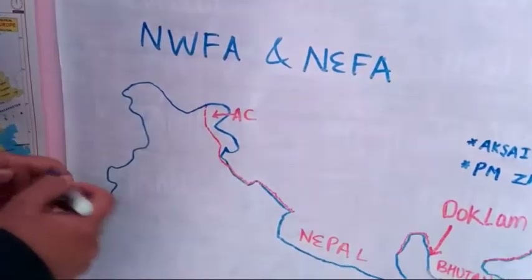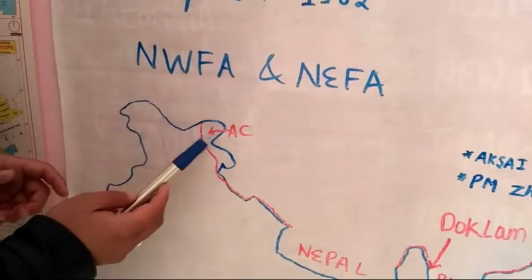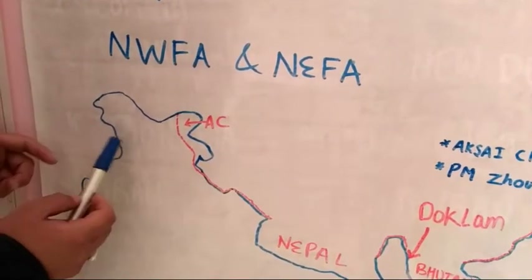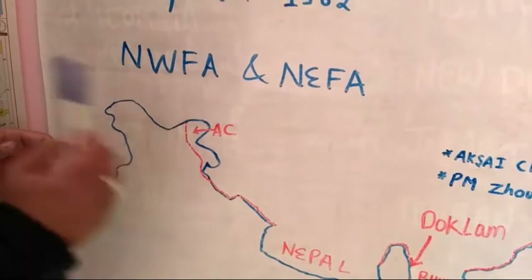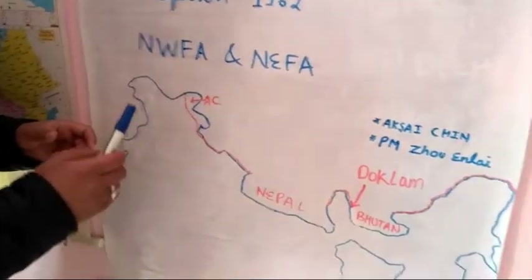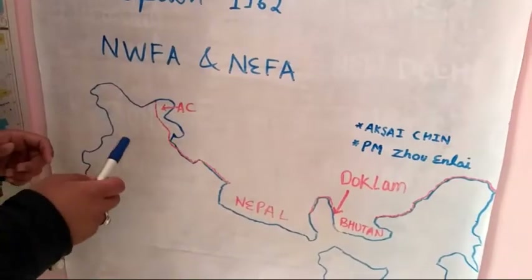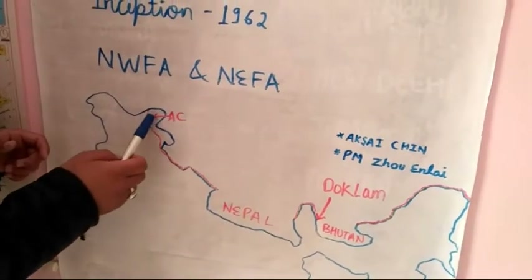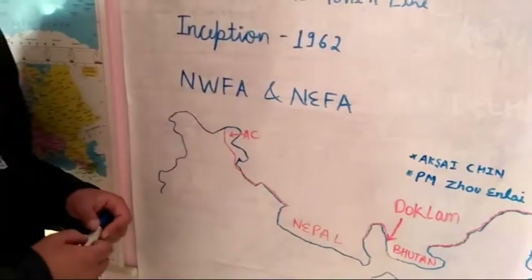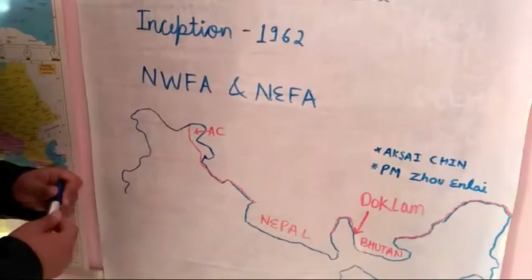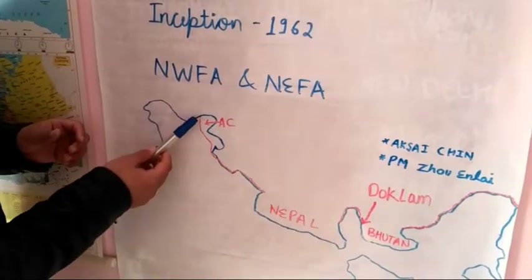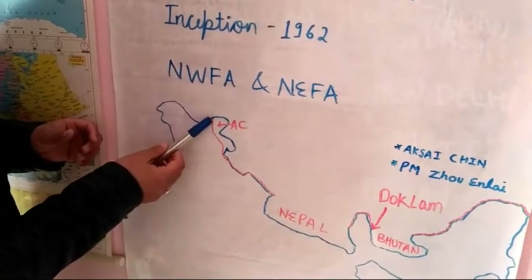This line actually originates from the region of Aksai Chin. Aksai Chin is basically a region that fell under Pakistan-occupied Kashmir after 1947. After the 1962 war, Pakistan gave this particular region to China. It is often referred to as China-occupied Kashmir, and the Line of Actual Control originates from this Aksai Chin.